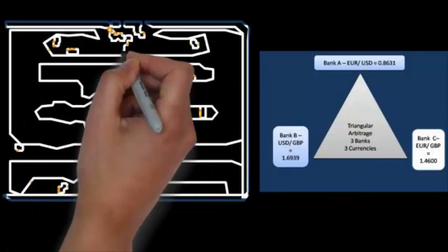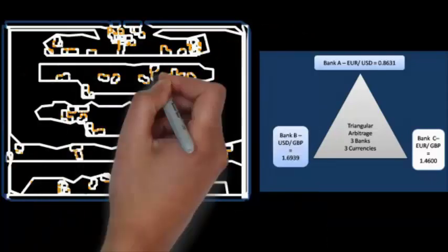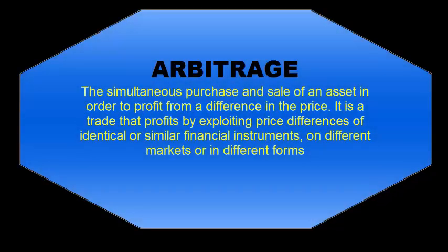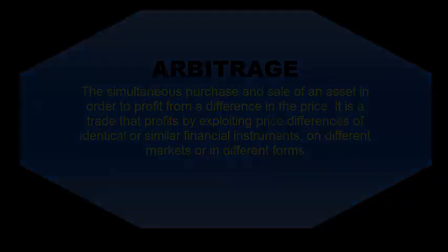In the second path, we are following Path 2: Dollar to Pound to Euro to Dollar. We converted the currency to Pound and then to Euro. But in this case, we made a loss of $1,513,172. So in Path 1, we can make an arbitrage profit.